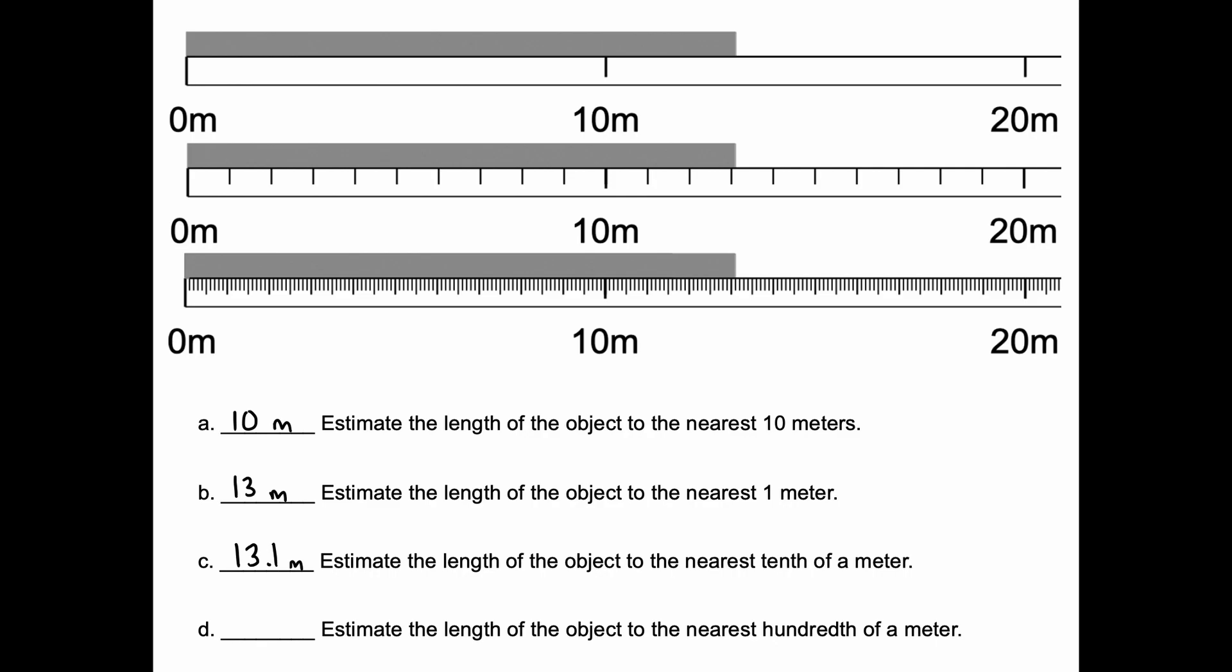Estimate the length of the object to the nearest hundredth of a meter. And it almost seems like an unreasonable question. If you zoom in real close, you can see that the edge of the stick is right just about on the hash mark itself. So, for that reason, I'm going to put 13.10, which means it's not to the right of the tenth, and it's not to the left of the tenth, it's pretty much right on it. And that's my best estimate.